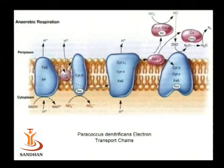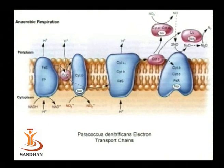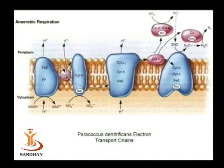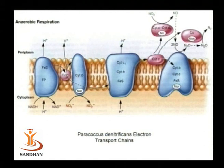These are the various components of the electron transport chain of Paracoccus denitrificans, where the final electron acceptor is nitrate. Four enzymes are involved: nitrate reductase, nitrite reductase, nitric oxide reductase, and nitrous oxide reductase, as shown in the electron transport chain.